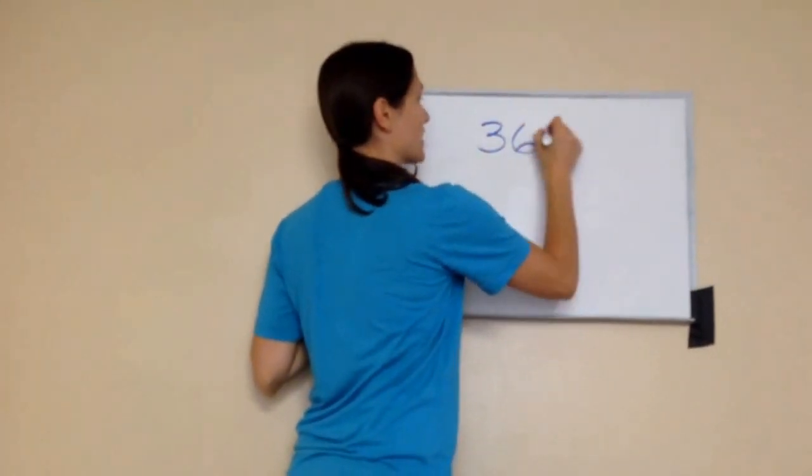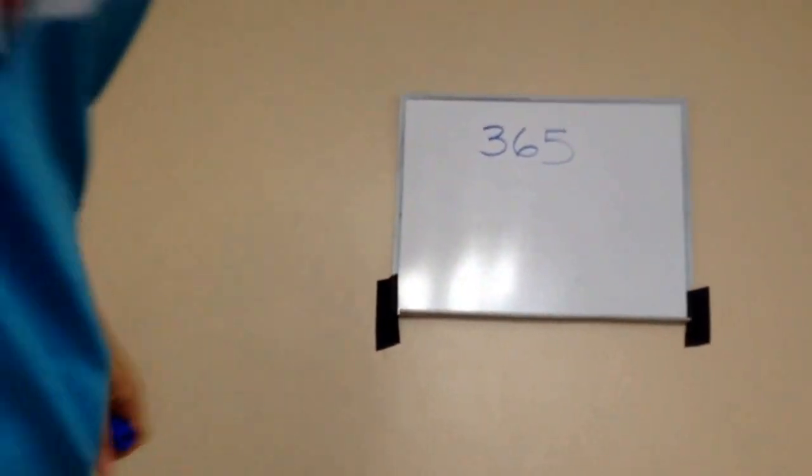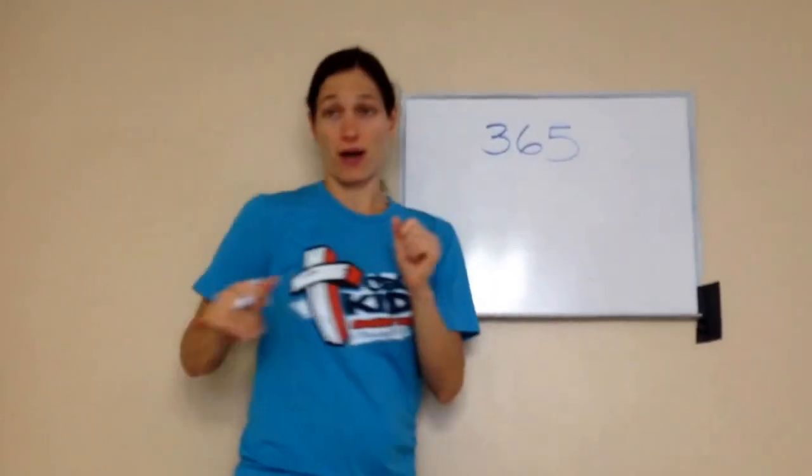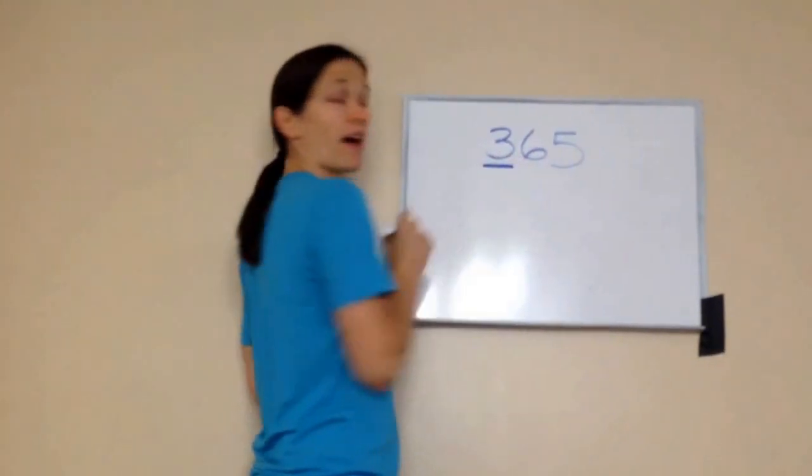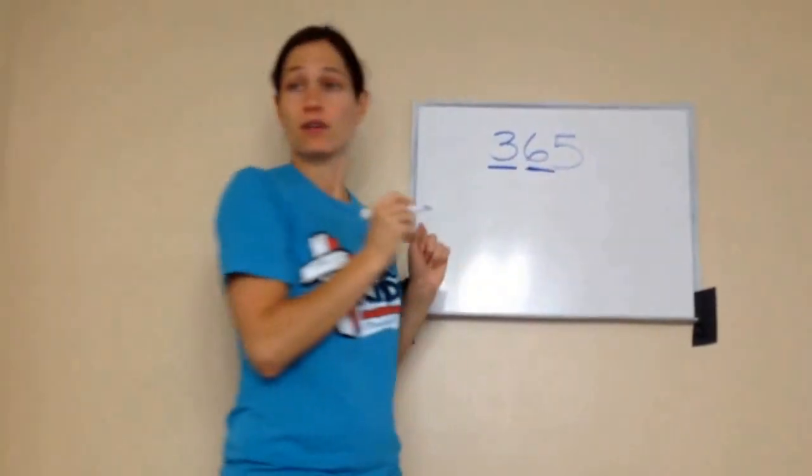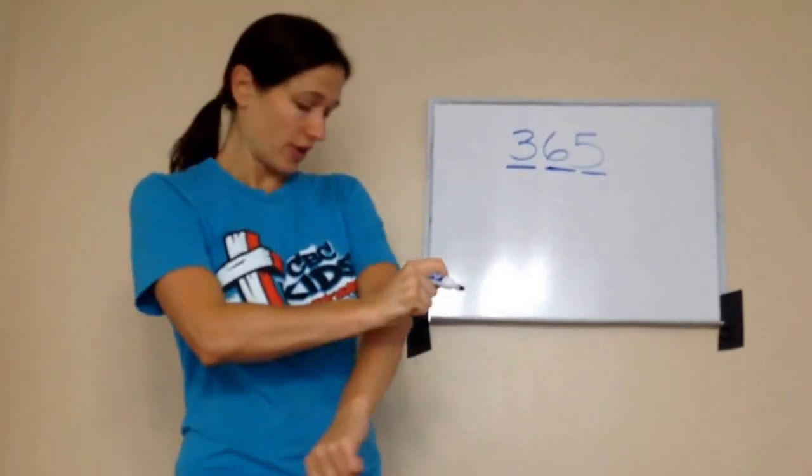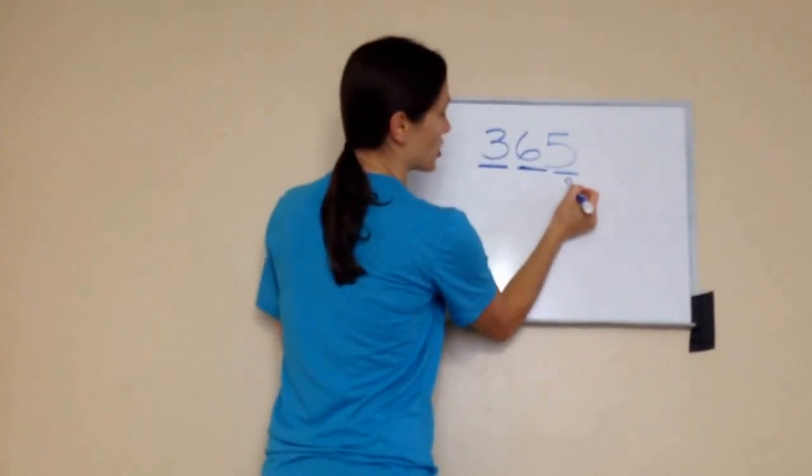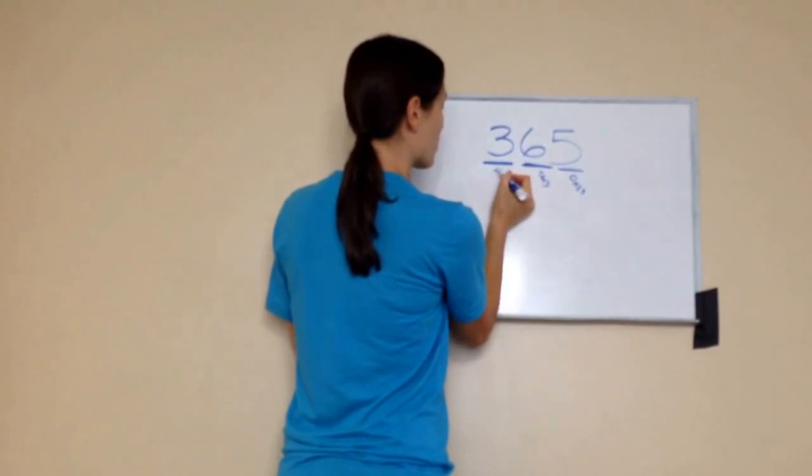365. Do you see that number? And the other thing we were talking about, do you remember this? How many hundreds do I have? Three. How many tens do I have? Six. And how many ones do I have? Five. Very good. So you remember that this is called the ones group, the tens group, and the hundreds group. Do you remember that?